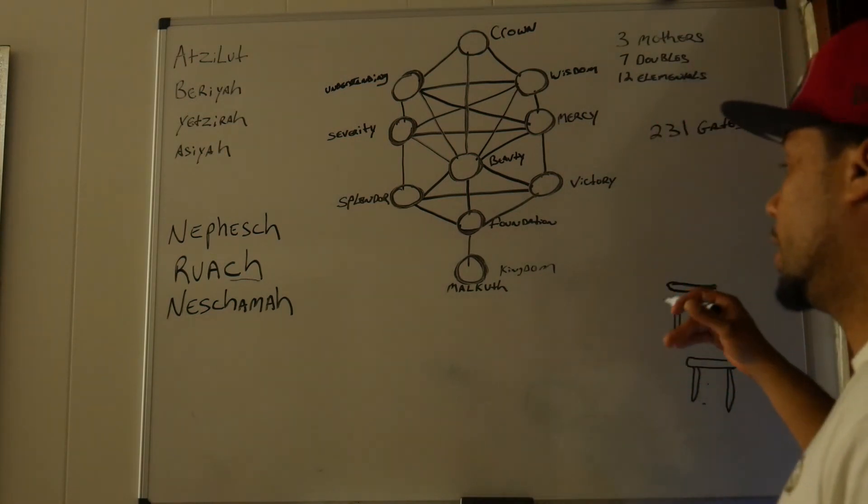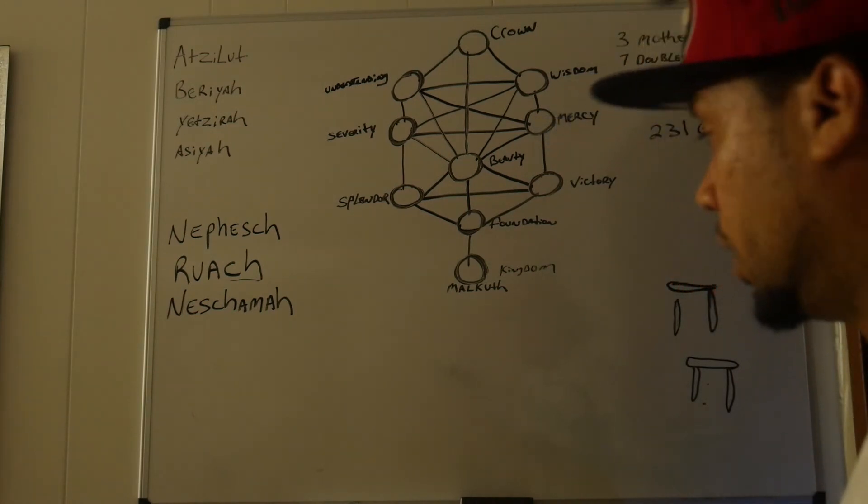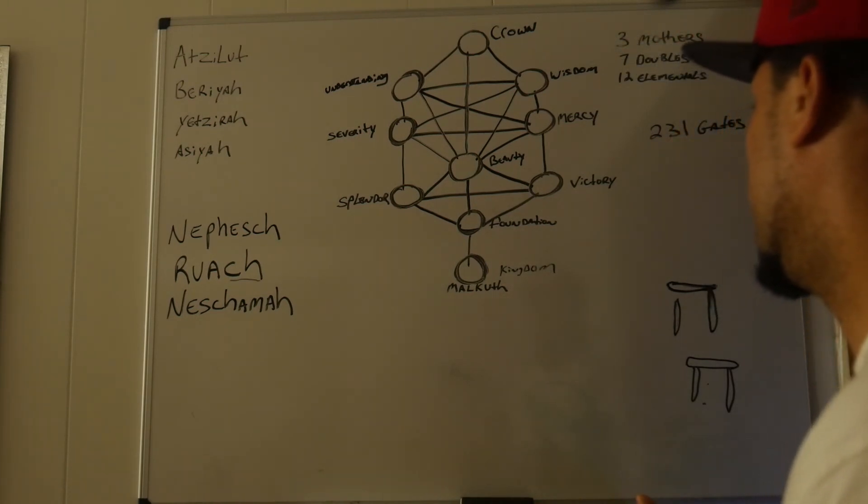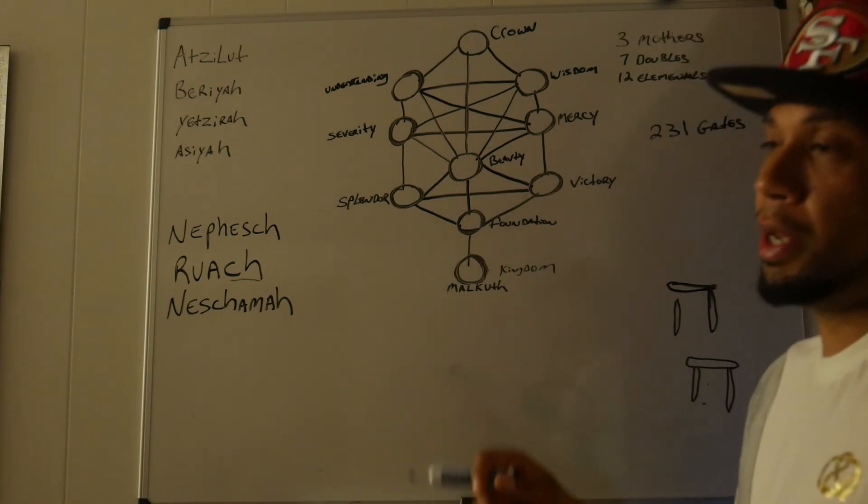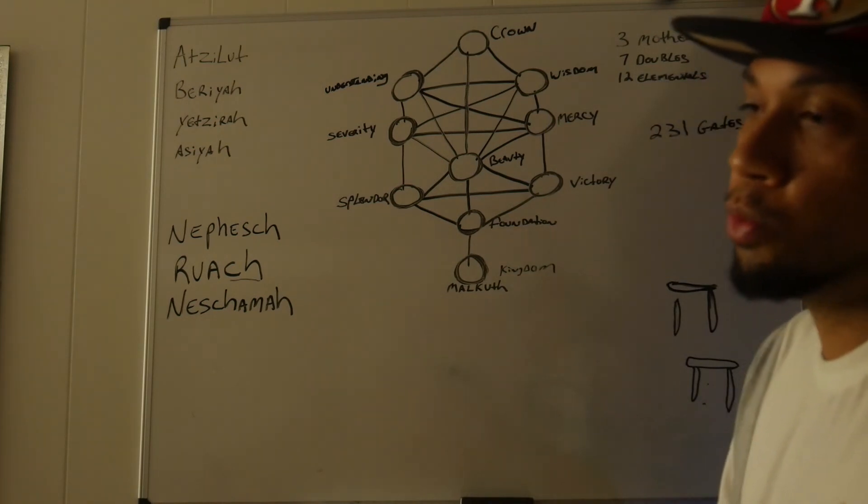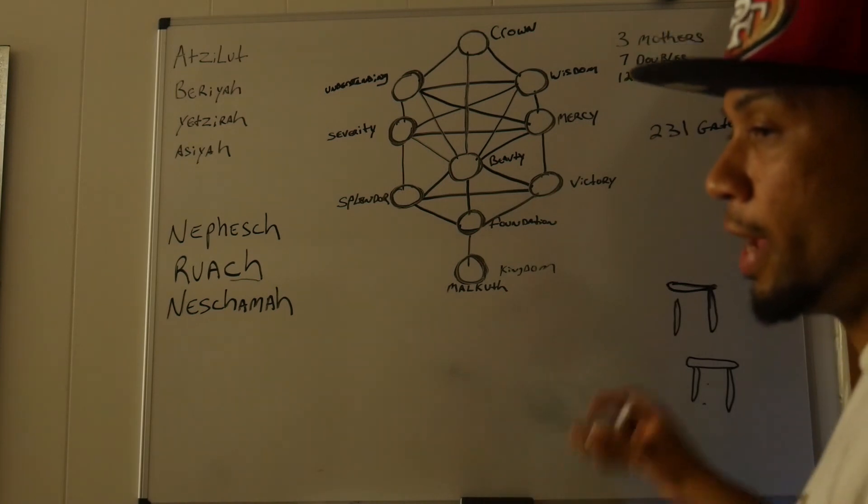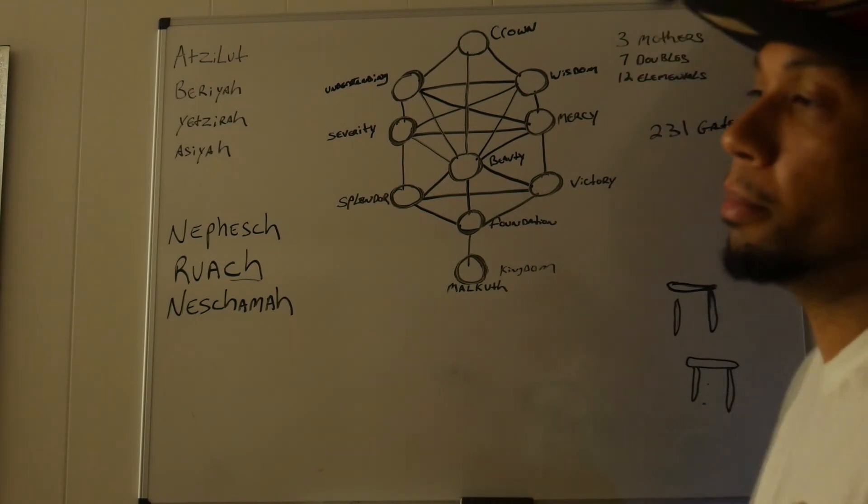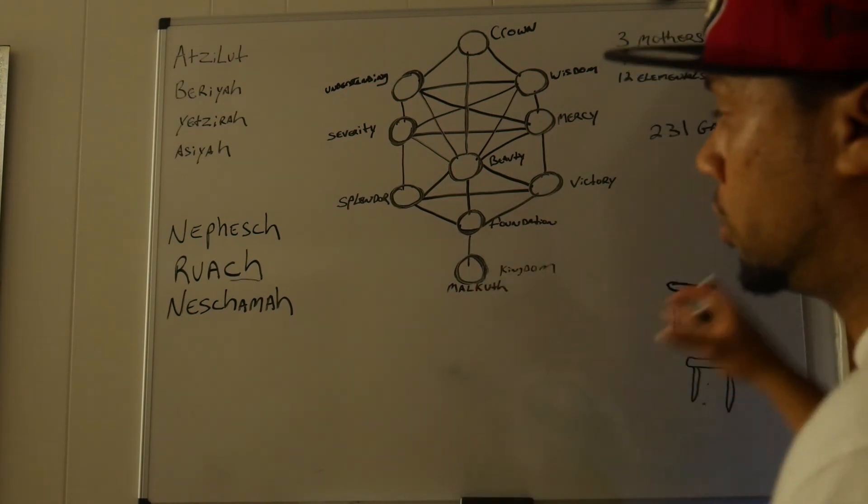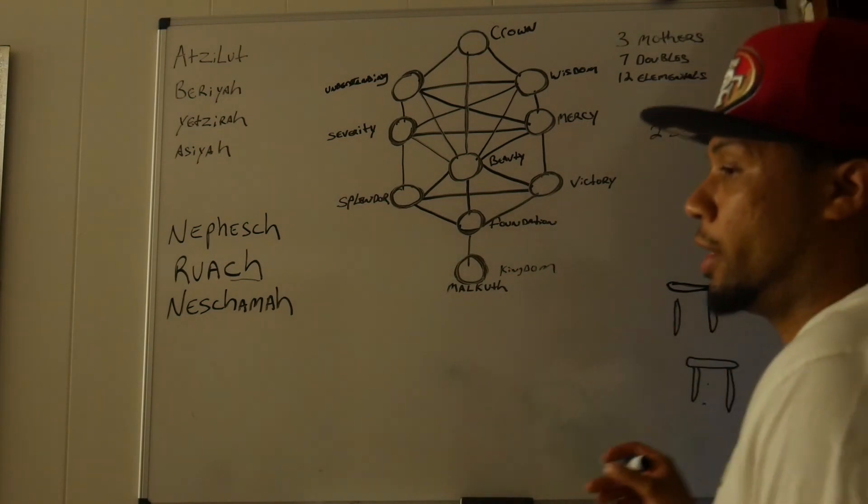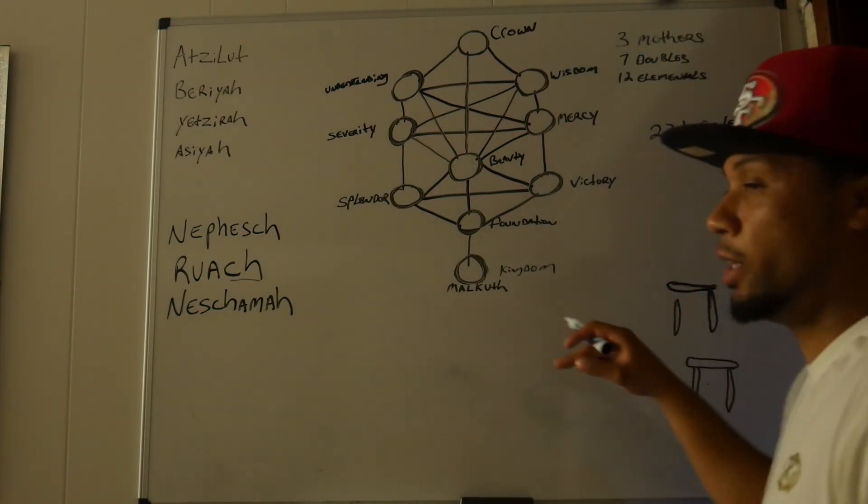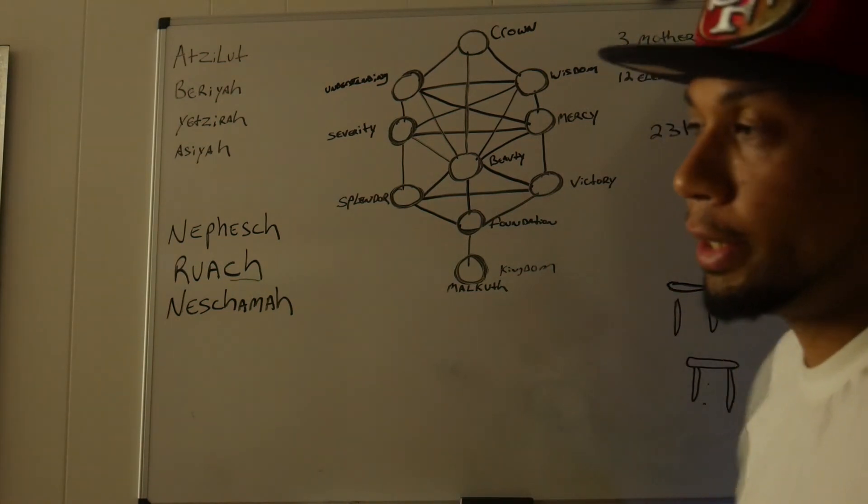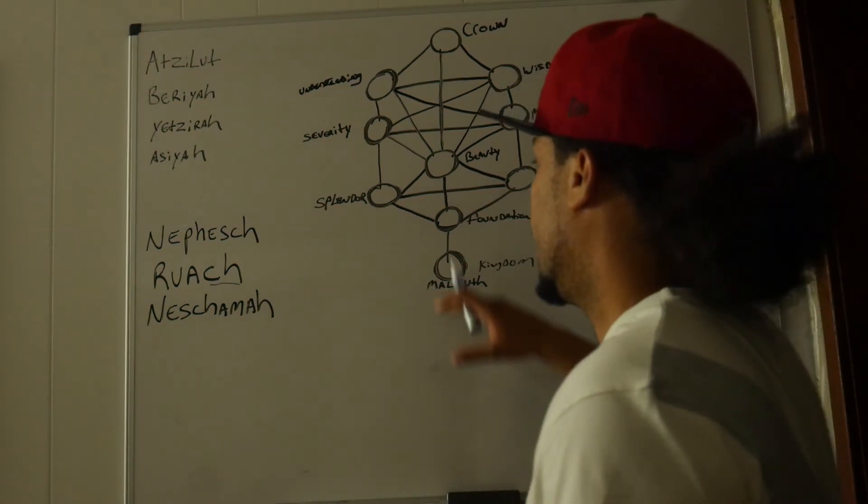And the 231 gates, it's a meditation exercise, where a person would meditate and they would take each letter, and take that letter. You start with like Aleph, and you would say Aleph, the letter or the sound of that letter with each letter in the alphabet. So you would go down, you would say Aleph-Bet, Aleph-Gimel, Aleph-Dalet. You would just go down and match that letter with each letter. And then you would do every letter, and doing that with every letter, it would take you 231 times, it's 231 gates. And this is supposed to unlock higher channels inside of your mind.